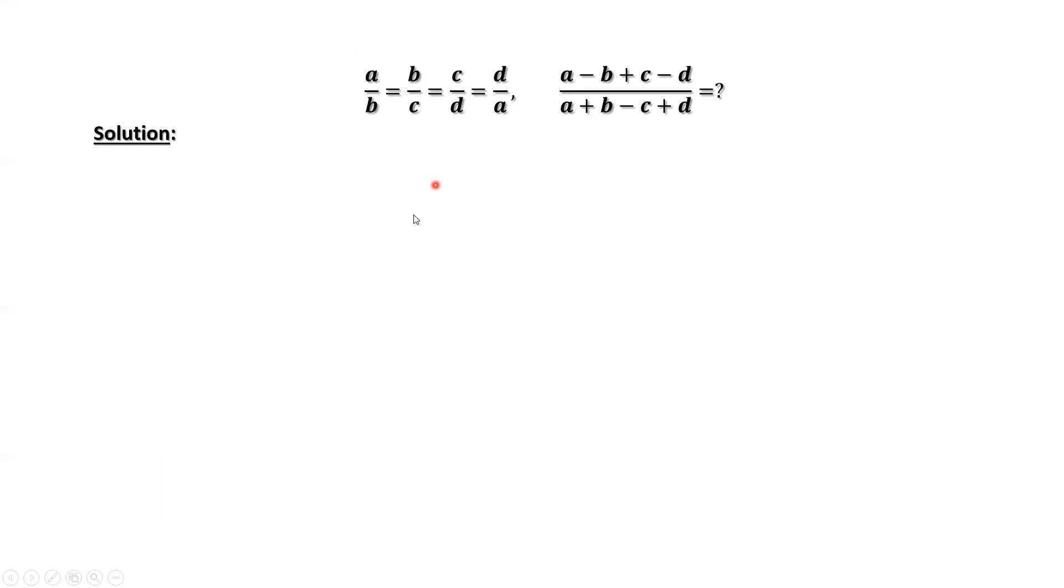From the first given condition, we have B squared equals AC. Since B squared is positive and B is not zero, this implies the right-hand side is positive. This means A and C have the same sign. If A is positive, C must be positive. If A is negative, C must be negative.